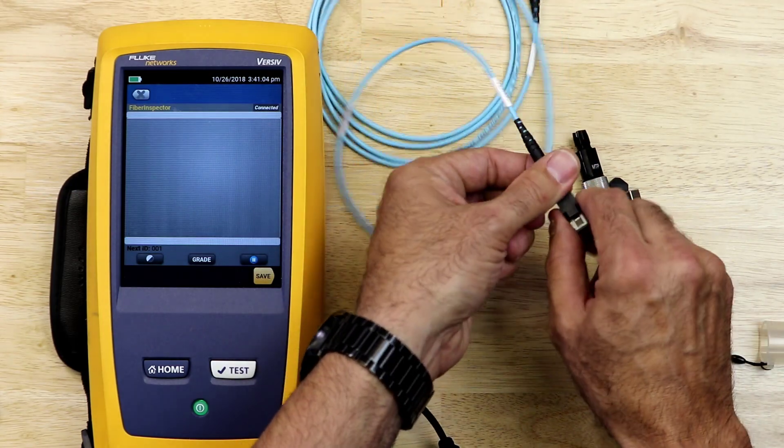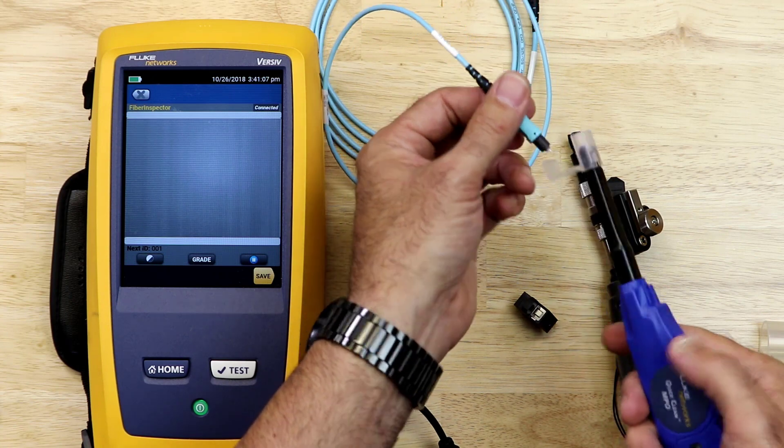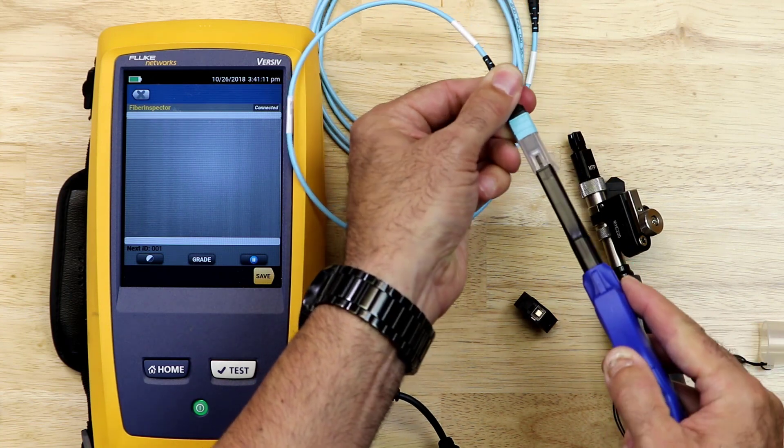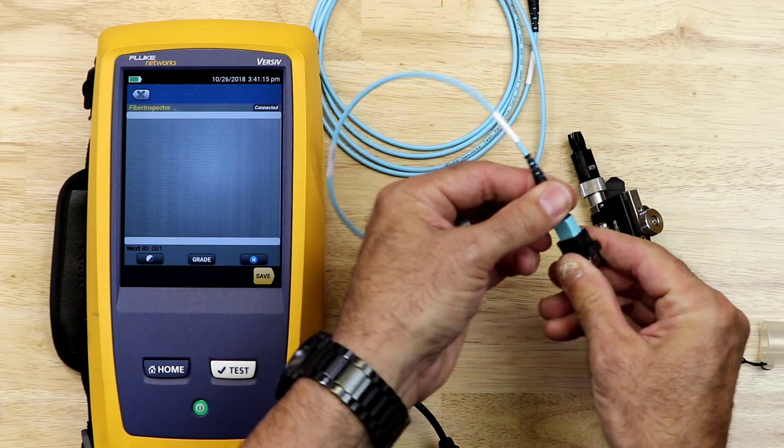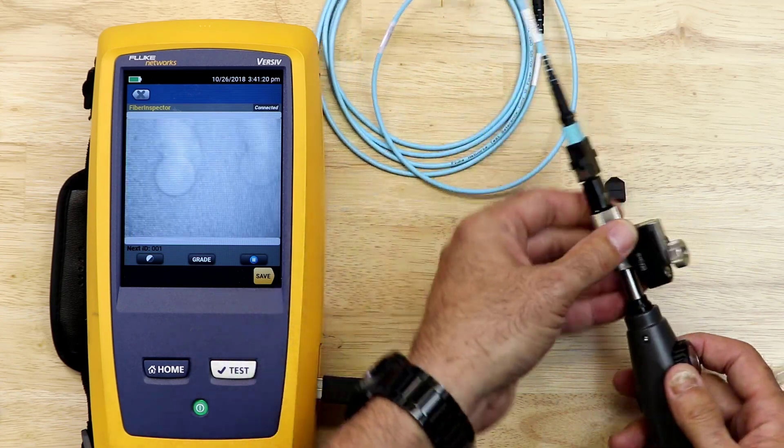I will disconnect the fiber from the inspection scope and use the click cleaner to clean the end face. I open the cover on the click cleaner, insert the fiber, and give it a click. Now I go back to the inspection scope to ensure that not only have I cleaned the dirty end face, but the rest of the end faces are clean as well. Now that I've inspected and cleaned all of my fiber end faces, I'm going to grab the pin to pin test cable.